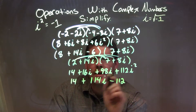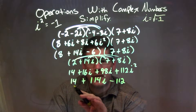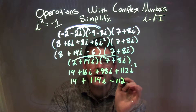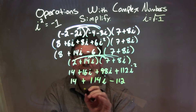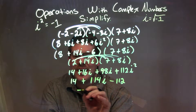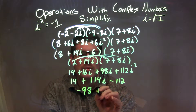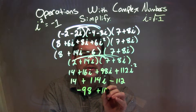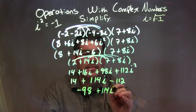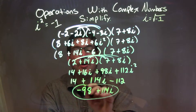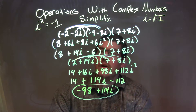So now we combine 14 and negative 112, which comes out to be negative 98. So we have negative 98 plus 114i, and that is our final answer.